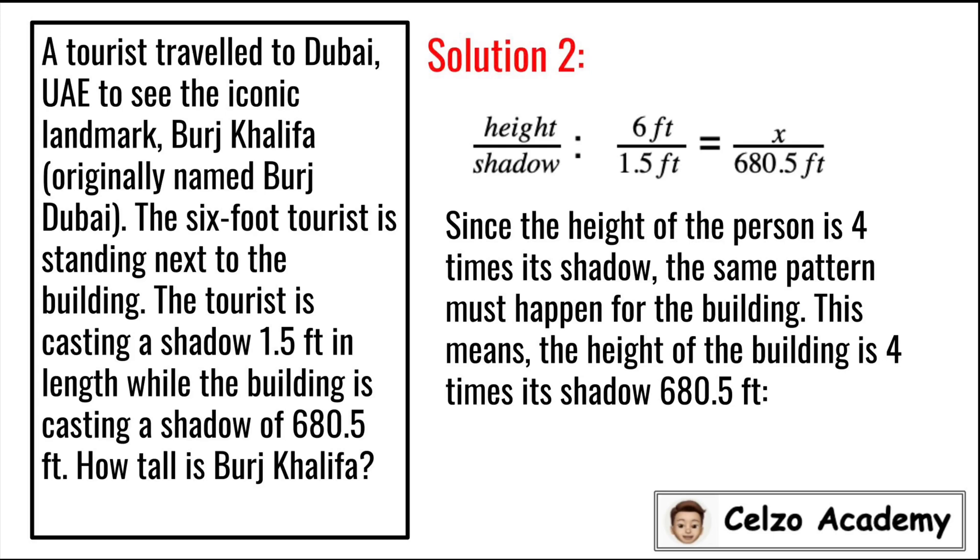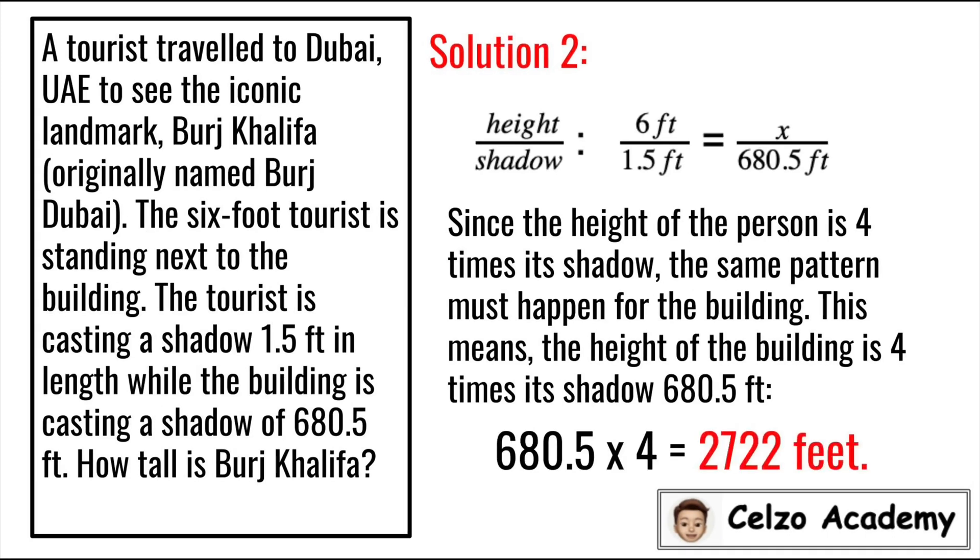To find the height of the building, we're simply multiplying the shadow 680.5 by 4. So 680.5 times 4 is equal to 2722 feet, which is the height of the building, Burj Khalifa.